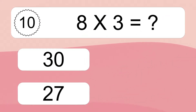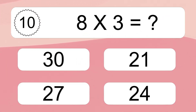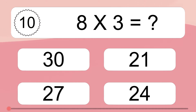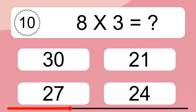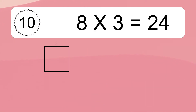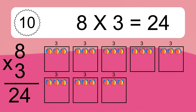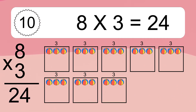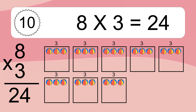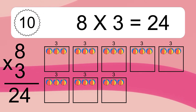8 times 3 equals what? 8 times 3 equals 24. We have 8 boxes and each box has 3 colorful balls inside. If you count all the balls in all the boxes together, you will have 8 times 3 balls. This equals 24 balls.